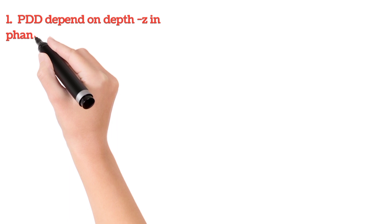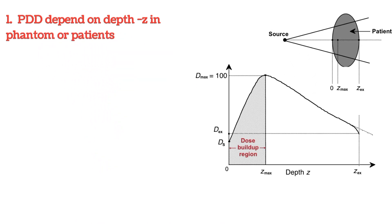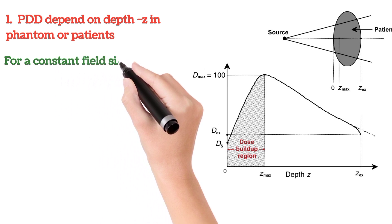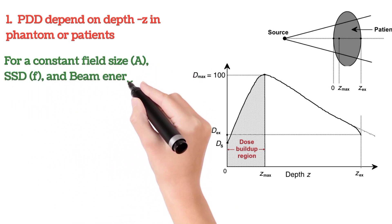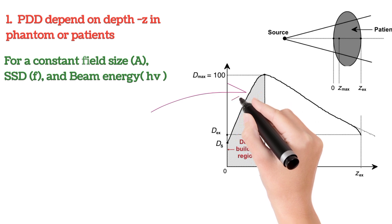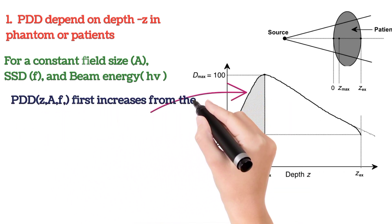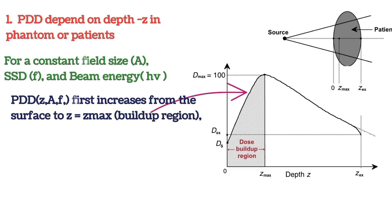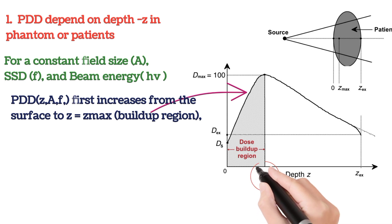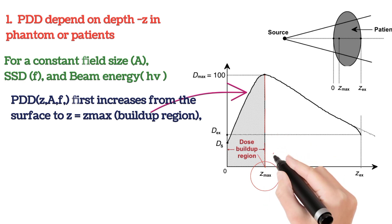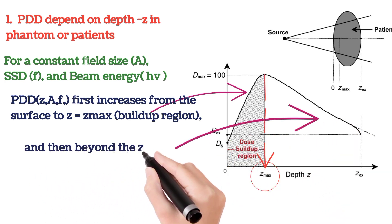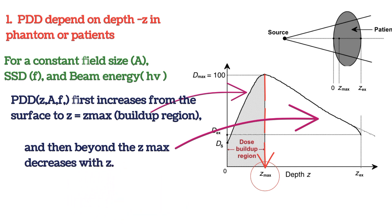We see how PDD depends on depth inside the phantom. For a constant field size, constant SSD, and fixed energy, PDD first increases with depth from the surface of the phantom to the depth of maximum dose. Here, Z max is the depth of maximum dose. Beyond Z max, PDD decreases with depth.